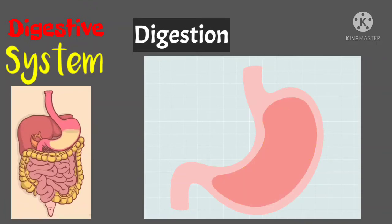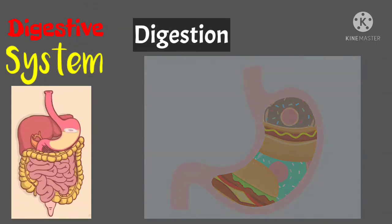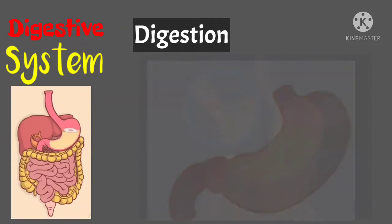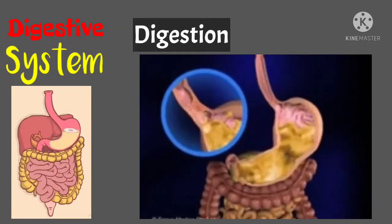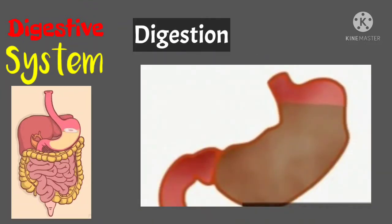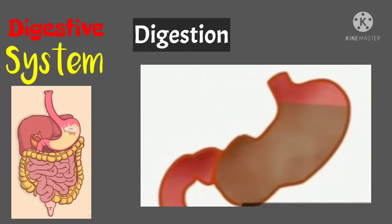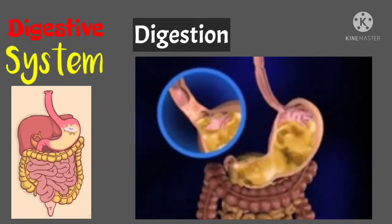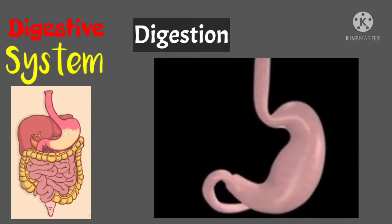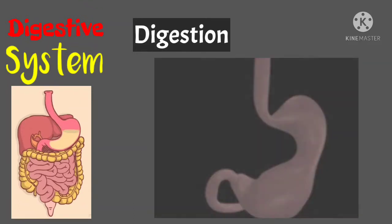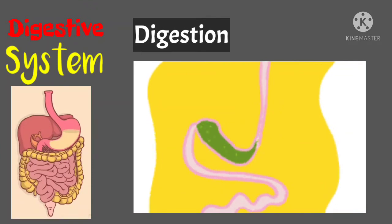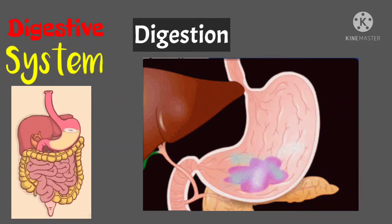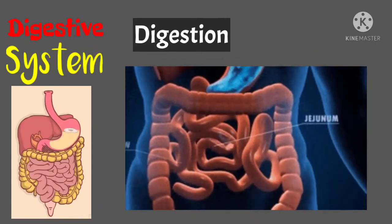Next is digestion. After mechanical digestion, food is then broken down into simpler substances through the help of enzymes. After food enters your stomach, chemical digestion takes place. Glands in your stomach lining make stomach acid and enzymes that break down food. Muscles in your stomach mix the food with these digestive juices. The stomach slowly empties its contents, called chyme, into your small intestine.